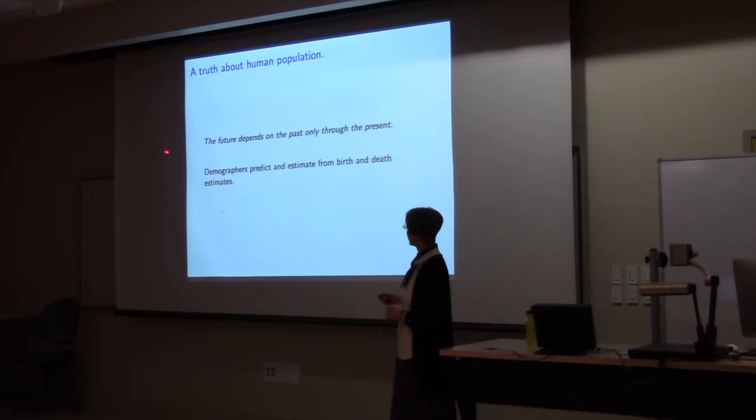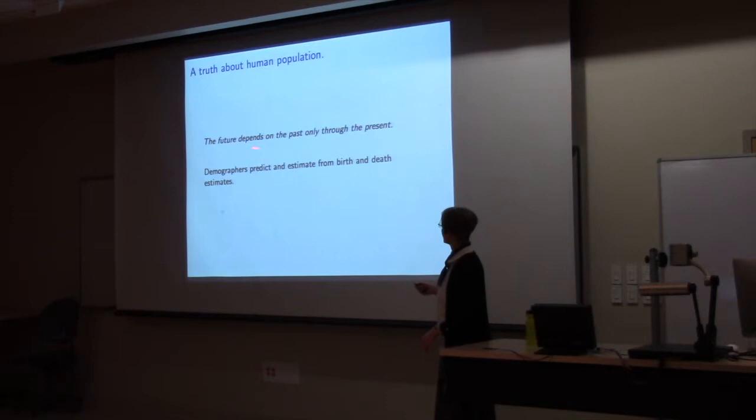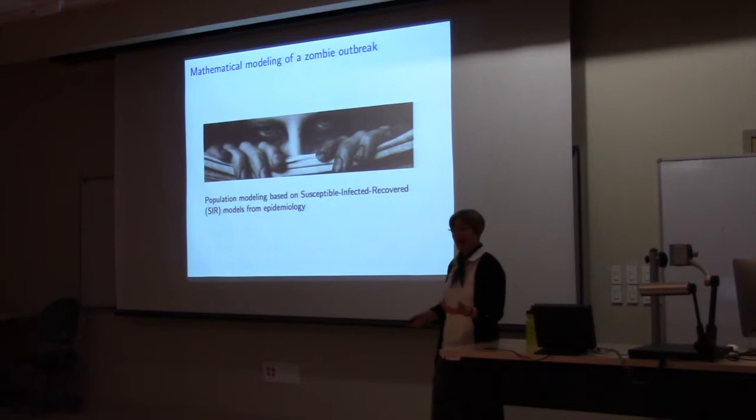And let me say that demographers who actually do predict what our population is going to be, they do that from estimates of current birth and death rates in the world. So they are not looking at curves like I looked at. They are looking at what is happening right here, right now with the best data that they can get. So don't despair. The future is not set in stone if we can still change it. So I hope that gave you some insight into how mathematical models can help inform us about a problem like overpopulation.